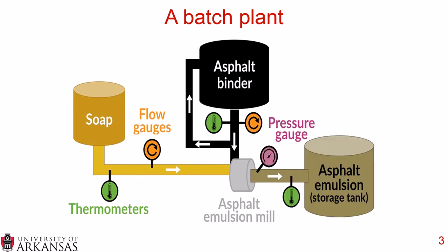Sometimes pressure is applied at the asphalt emulsion mill, so you need to monitor the pressure at the mill through a pressure gauge, and the resulting asphalt emulsion needs to be at a certain temperature.